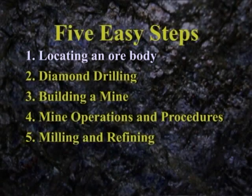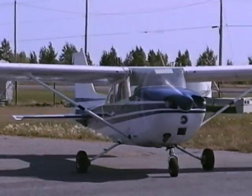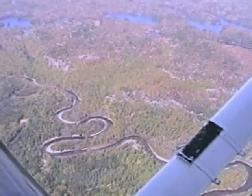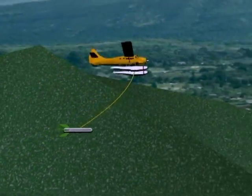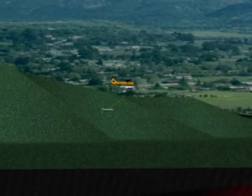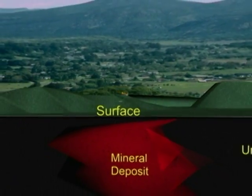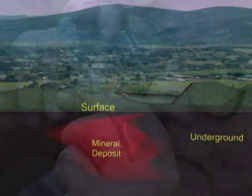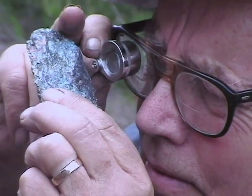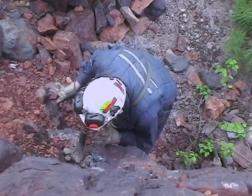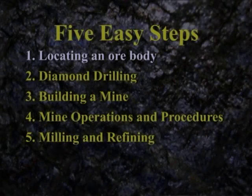Step 1: Locating an ore body. This is where it all starts — in the Northern Ontario wilderness. Planes or helicopters fly over areas with high-tech equipment that measures the amount of electrical conductivity and magnetism of the rock, looking for favorable rock types where ore is often found. The prospector also looks for signs of colorization, which can indicate where ore may be present.